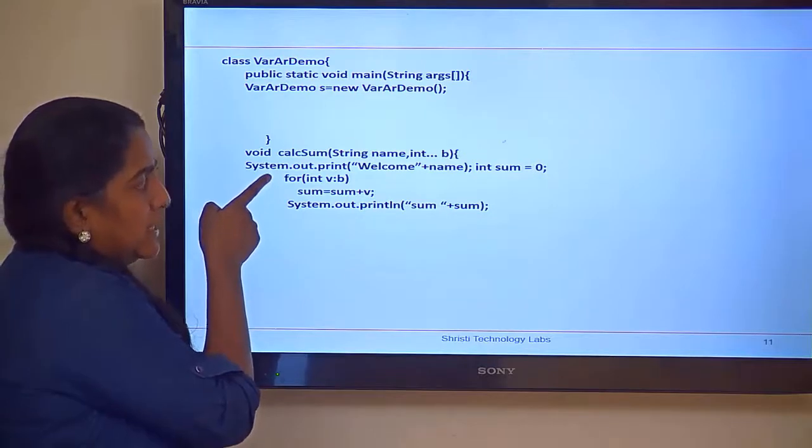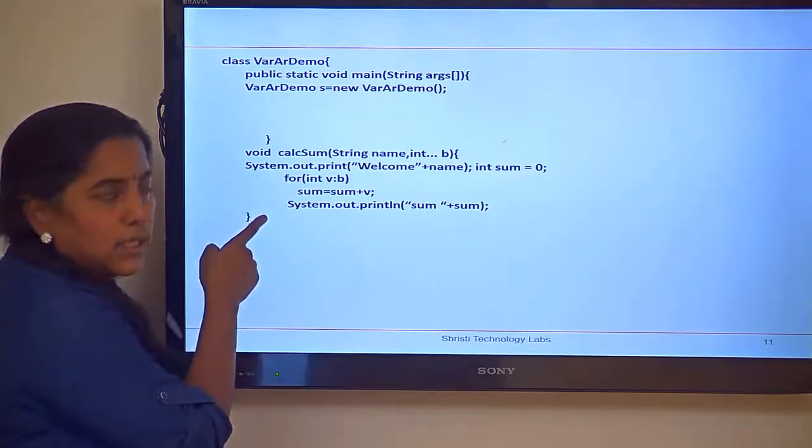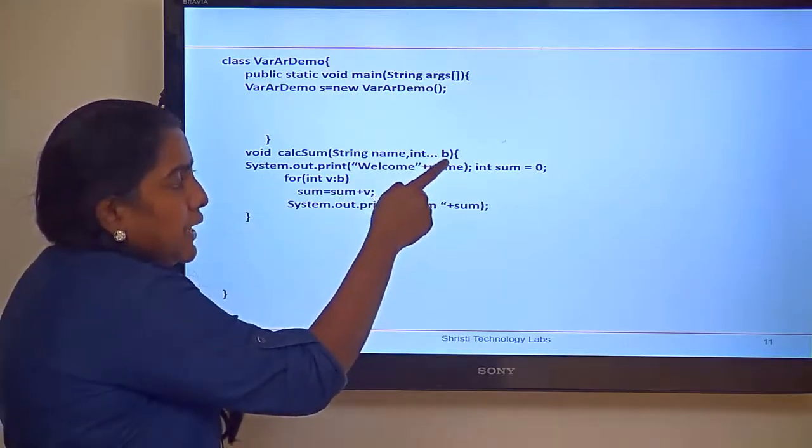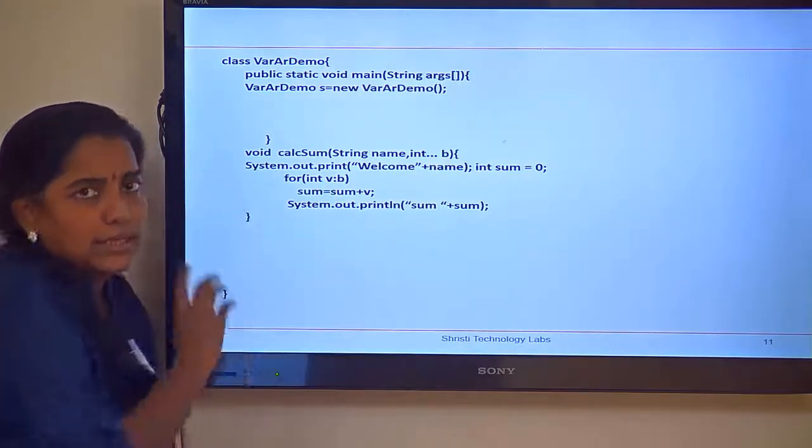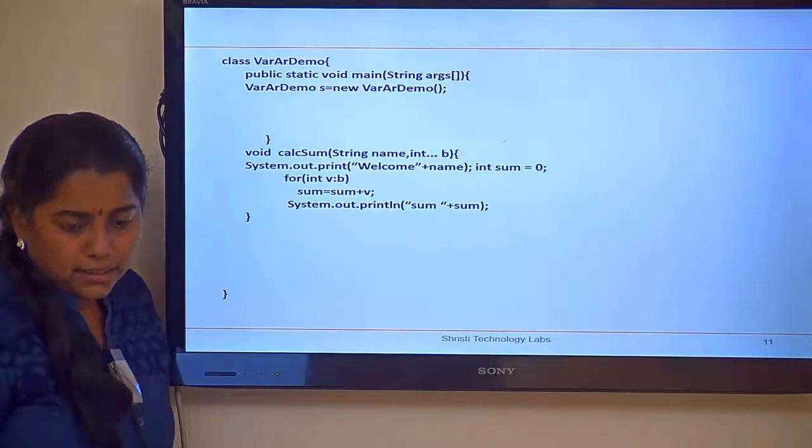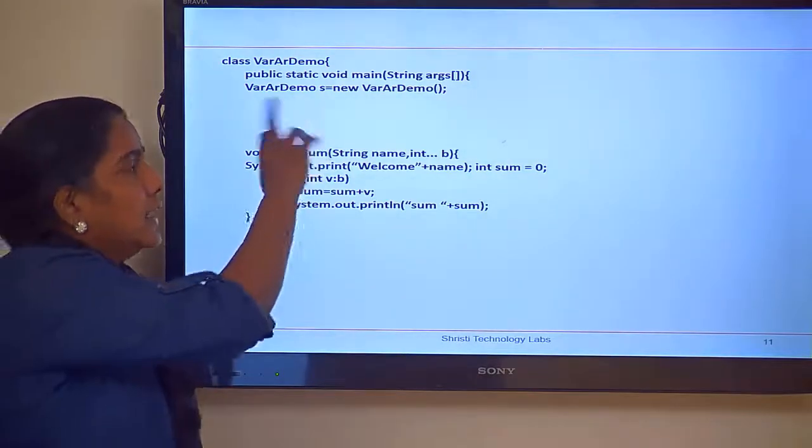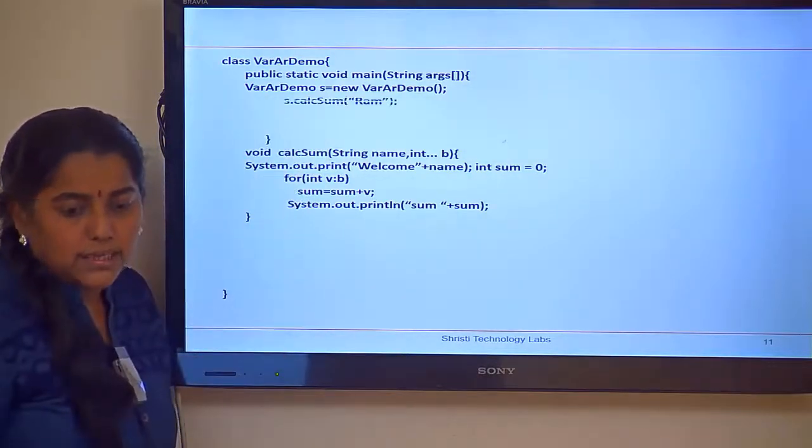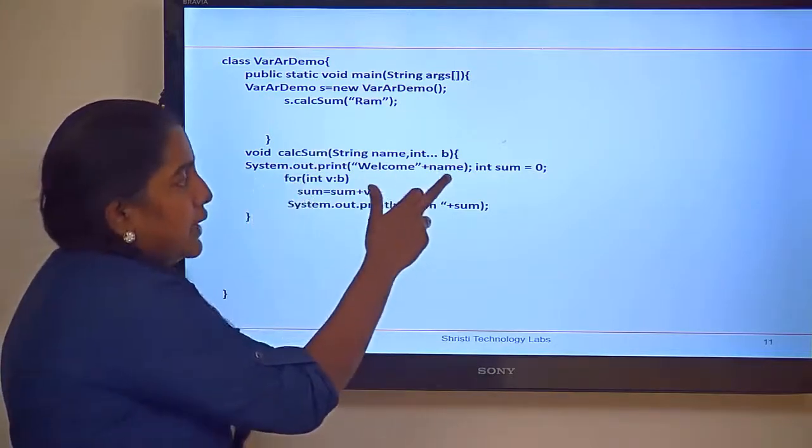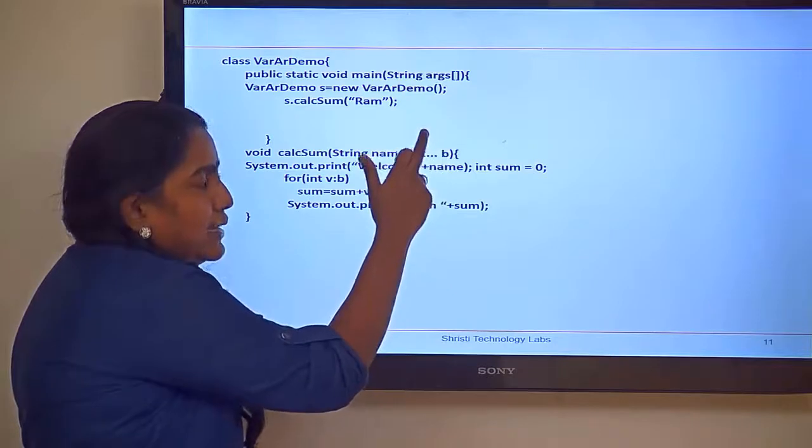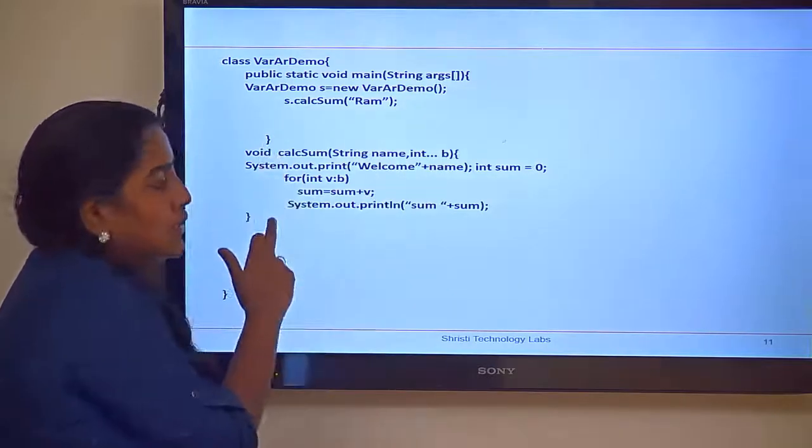Now, let us see the flow. I am trying to calculate the sum of numbers by using a for each. What is b? b is a variable argument array. So, I am trying to use for each to calculate the sum. Now, let me try calling the calc sum method. I have already created an object. s dot calc sum of ram. What will be the output? It will come and print welcome ram. What about the array length? It is 0. It will not enter into the for loop.